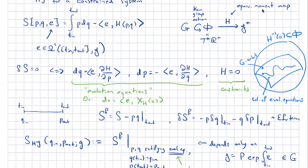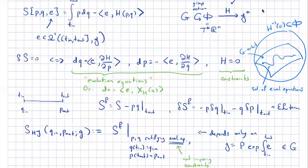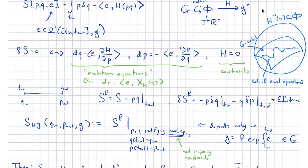If I calculate the variation of S adjusted, the boundary term of the variation contains delta Q at the initial time — which is zero if Q initial is fixed — and delta P at the final time — which is also zero if P final is fixed. So I added this term so as to have delta P at the final time rather than delta Q. It's a variational calculus trick, plus a term that vanishes on the Euler-Lagrange equations. The moral is: if you change your preferred polarization, you should accompany it by a boundary term for the action.